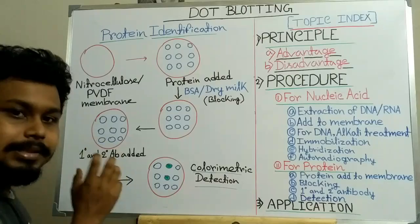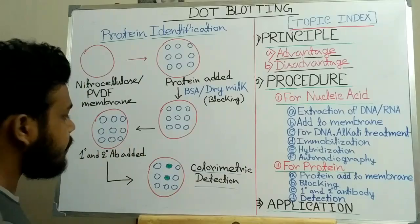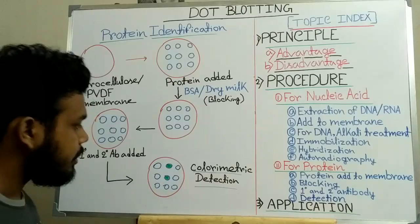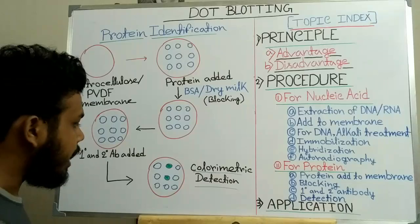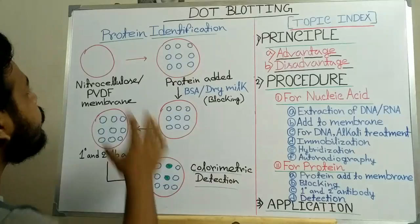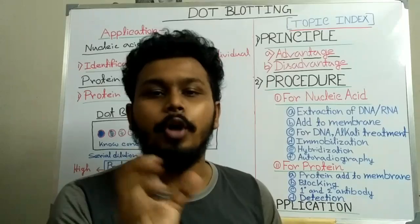Next, the secondary antibody is added to the nitrocellulose membrane, which specifically binds to the primary antibody. This secondary antibody is attached with an enzyme. When we add the substrate of that enzyme, the enzyme converts the substrate to a colored product. We can then visualize this colored product and interpret that the samples containing it have our target protein. In this way, we can identify the presence of a protein by dot blotting.